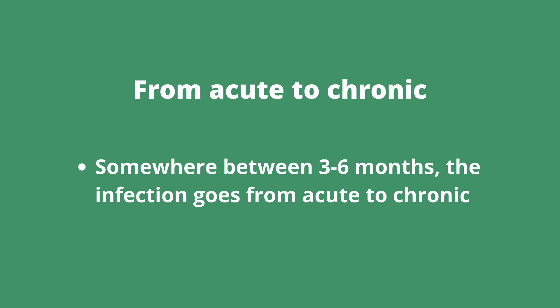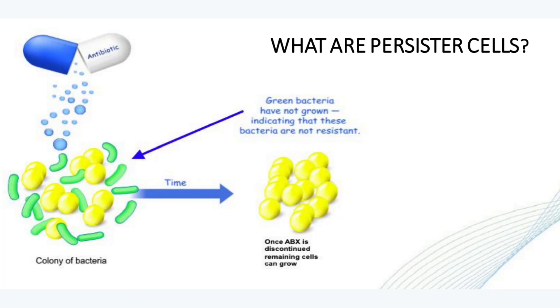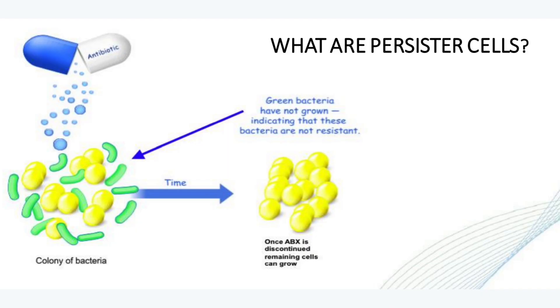Now here's a picture. This is directly taken from Dr. Leone's presentation and I thought it illustrated this point wonderfully. It says 'What are persister cells?' This is another term you'll see: persister cells, or cell wall deficient cells, or cyst cells, or stationary phase, or non-growing phase. These are all terms to describe the different versions that the bacteria take.